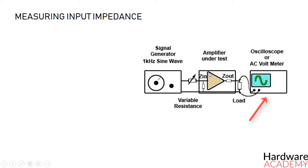An oscilloscope or AC voltmeter is connected across the amplifier load, which can be, for example in our case, a loudspeaker.